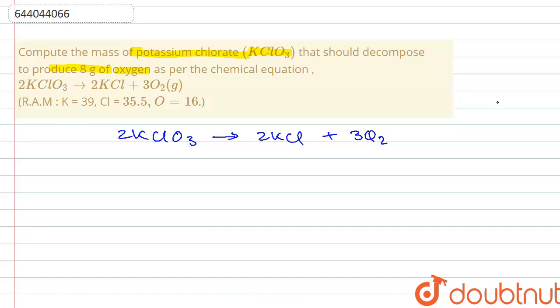They have given us the mass that is produced of oxygen. The given mass of oxygen is 8 grams. Now let's first calculate the molecular mass of KClO3 and oxygen.